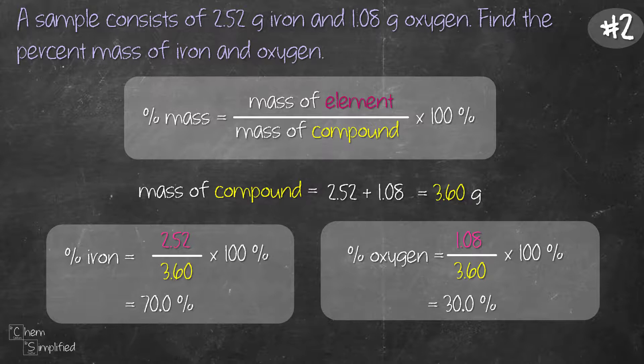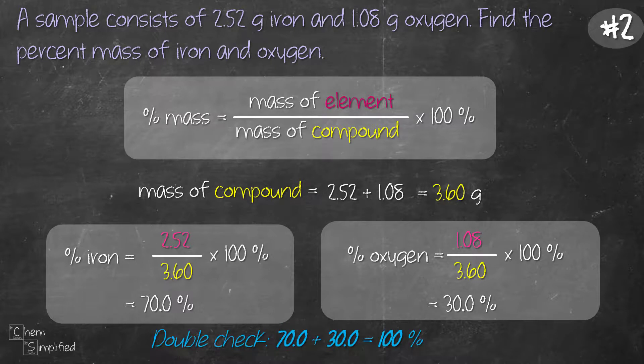Again to double check we quickly add up the percentages that we've calculated. 70 plus 30 that gives us 100%. With that we've calculated the percent iron and oxygen using the experimental values.